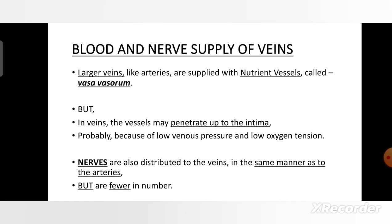Next are the blood and nerve supply of veins. Blood supply is through the nutrient vessels called the vasa vasorum. In veins, these vessels may penetrate up to the intima because of low venous pressure and low oxygen tension. Nerves are also distributed to veins in a similar manner as arteries, but they are few in number compared to the arteries. Thank you.